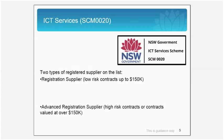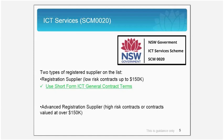There are two categories of suppliers on the ICT Services Scheme. Registered suppliers, who are signed up to provide services for contracts up to $150,000, which are deemed low risk; and advanced suppliers, who can be engaged for work over $150,000, essentially high risk. When engaging with suppliers on low risk contracts, you should use the short form ICT general contract terms. But when you engage suppliers on high risk contracts, which are over $150,000, you will need to use the long form Procure IT contract.